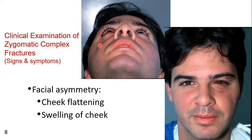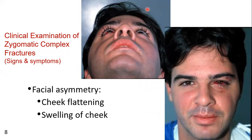The cheek flattening is obvious here, as you can see, and in this patient you can see a cheek swelling as well, along with facial asymmetry — it is the cheek flattening. Sometimes the swelling of the cheek will mask the cheek flattening. But with careful observation and proper examination — that is by looking from above while standing behind, or looking straight from the front — you will be able to appreciate both the cheek flattening and the swelling of the cheek.